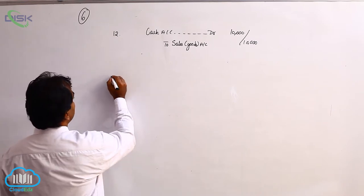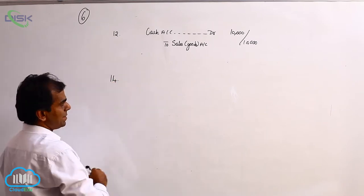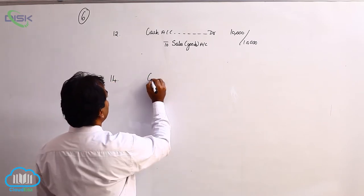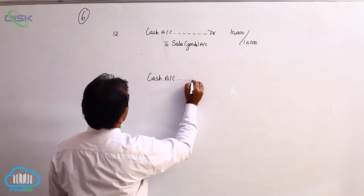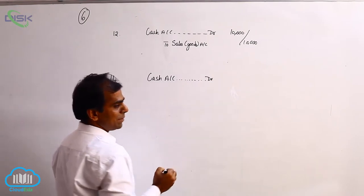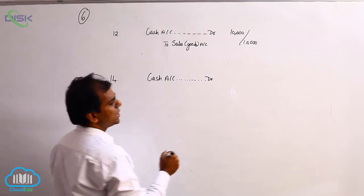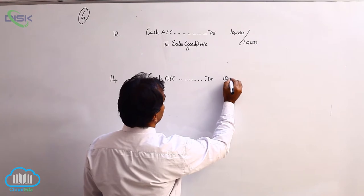On the 14th, you made a sale and are getting cash. Cash is coming in - real account rule says debit what comes in. How much are you getting in cash? 10,000.